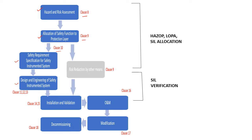In these steps, HAZOP and SIL allocation is being done and the designing and engineering of safety instrumented system. Installation and validation is the stage where the SIL verification is mainly conducted.